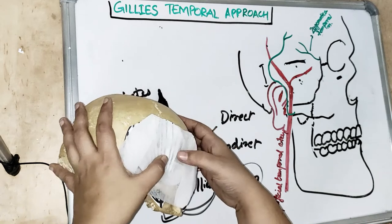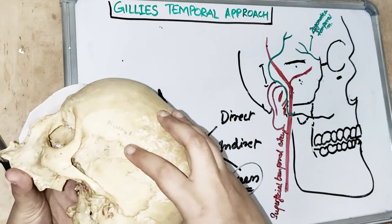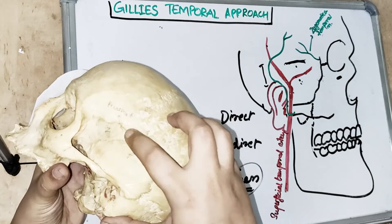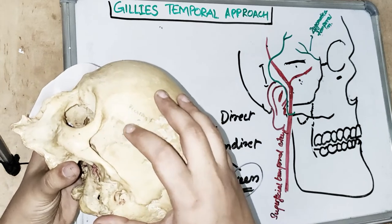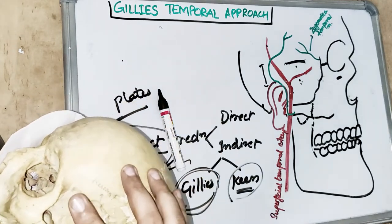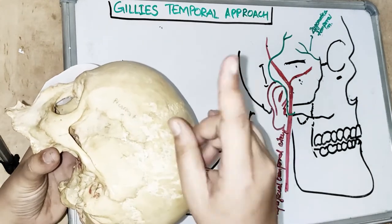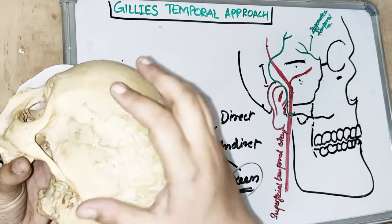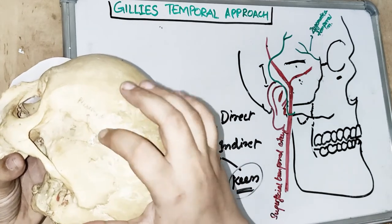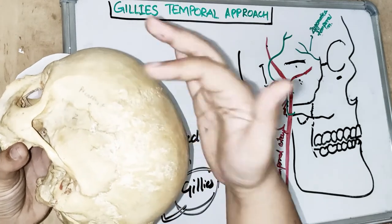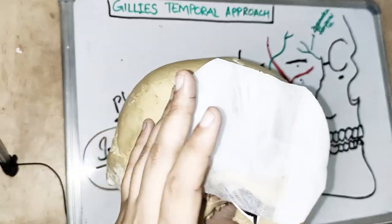The floor of the temporal fascia is formed by the pterion, which is an H-shaped suture composed of four bones: the greater wing of the sphenoid, the frontal bone, the parietal bone, and the temporal bone. Between the two layers of deep temporal fascia, we also have fat, the superficial temporal artery, and the zygomaticotemporal nerve. This completes the floor of the temporal fascia region.